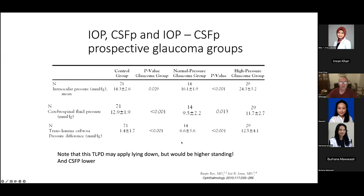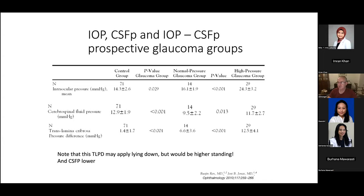Looking at prospective measurements from Beijing, China, CSF pressure is also reduced in normal tension glaucoma patients. Measurements of CSF pressure were done with the subject lying down; when translated to measurements at eye level with the patient sitting at the slit lamp, you get a corrected measurement of CSF pressure at eye level — and again you see that normal tension glaucoma patients' CSF pressure is lower.